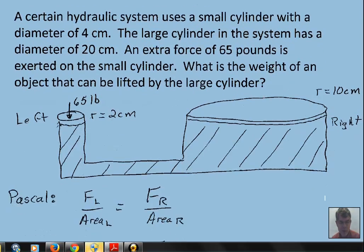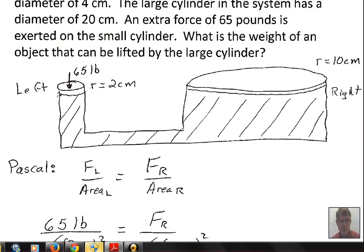The Pascal's principle method says that this pressure we create on the left, the force on the left piston divided by the area of the left piston, is equal to the force that exists on the right piston divided by the area of the right piston. Force over area is pressure. Pascal's principle says that this extra pressure is felt every place in the system.